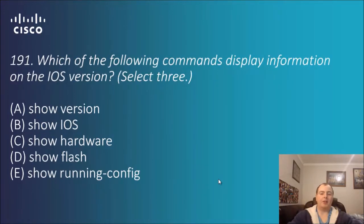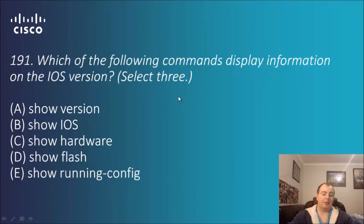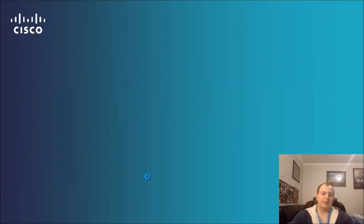Question 191: which of the following commands display information on the IOS version? And believe it or not, there are three possible commands. Options are: show version, show OS, show hardware, show flash, and show running-config. The three answers are show version, show flash, and show running-config.